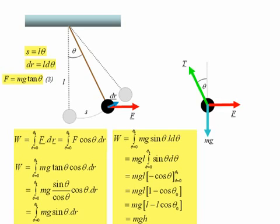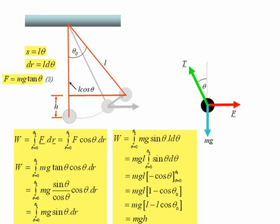This is equal to MGH, where H is just equal to the increase in height of the pendulum bob as it moves to an angle theta 0, as shown here.